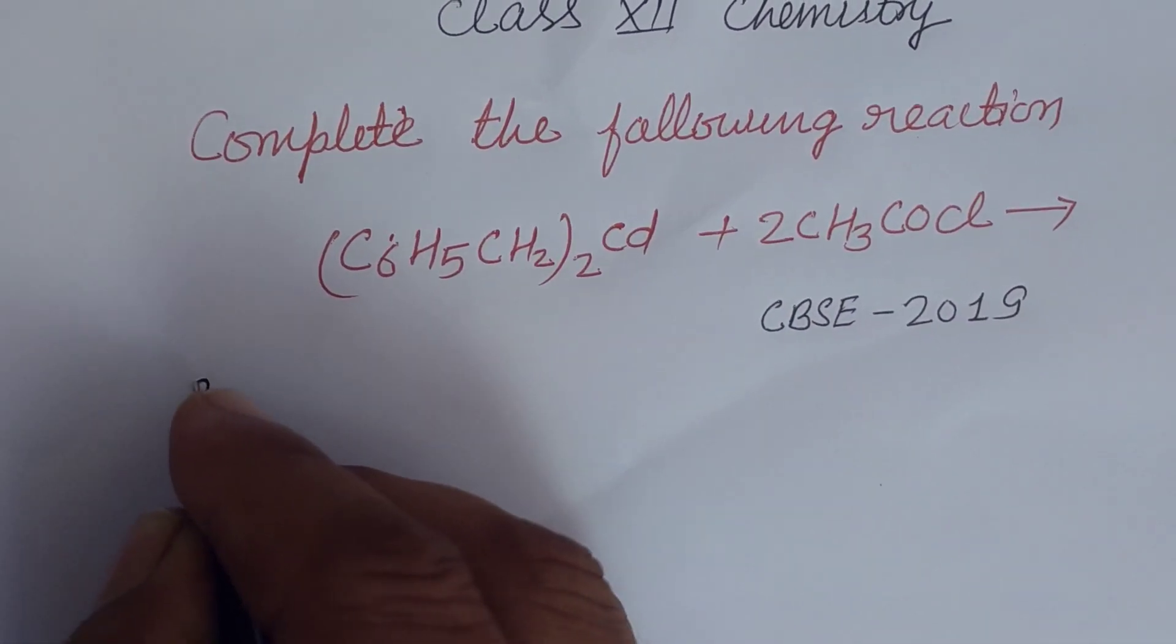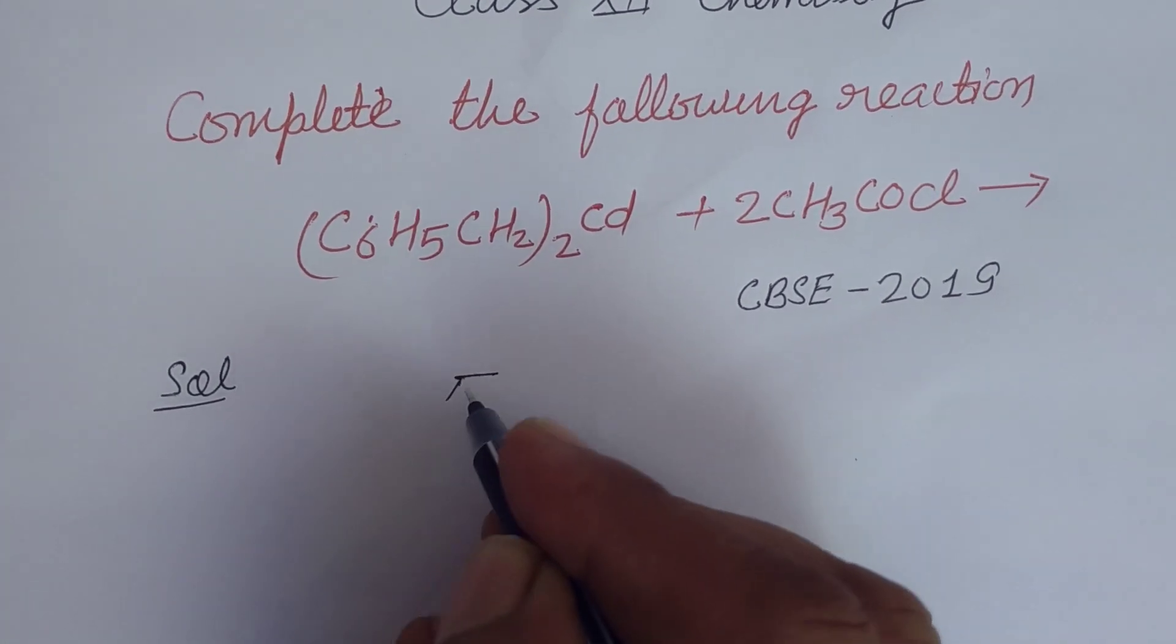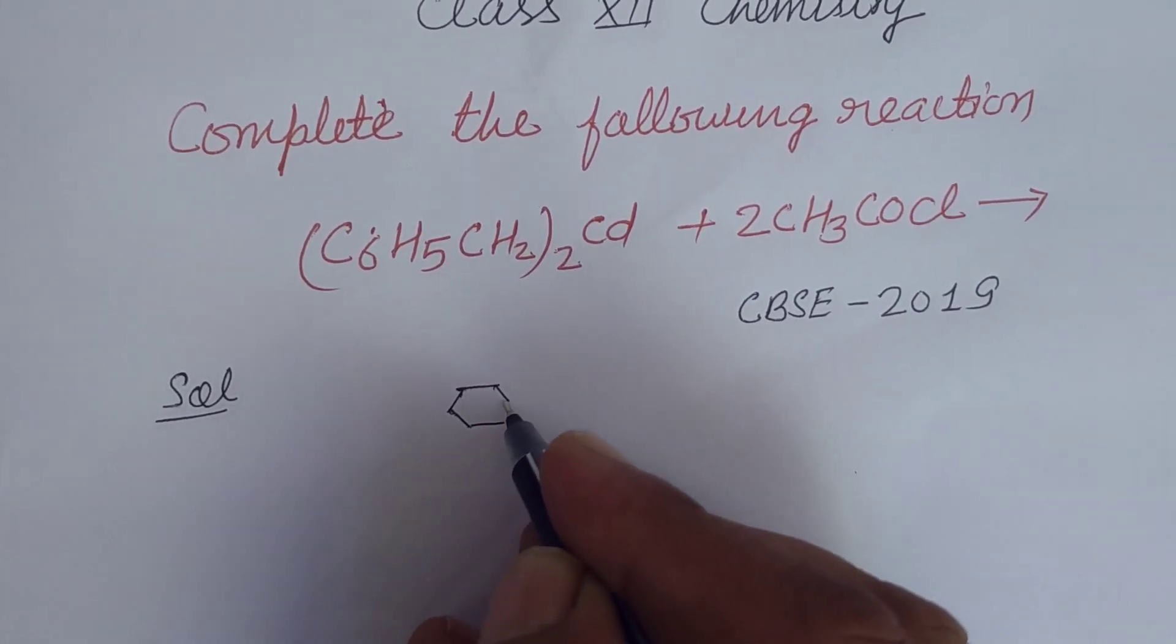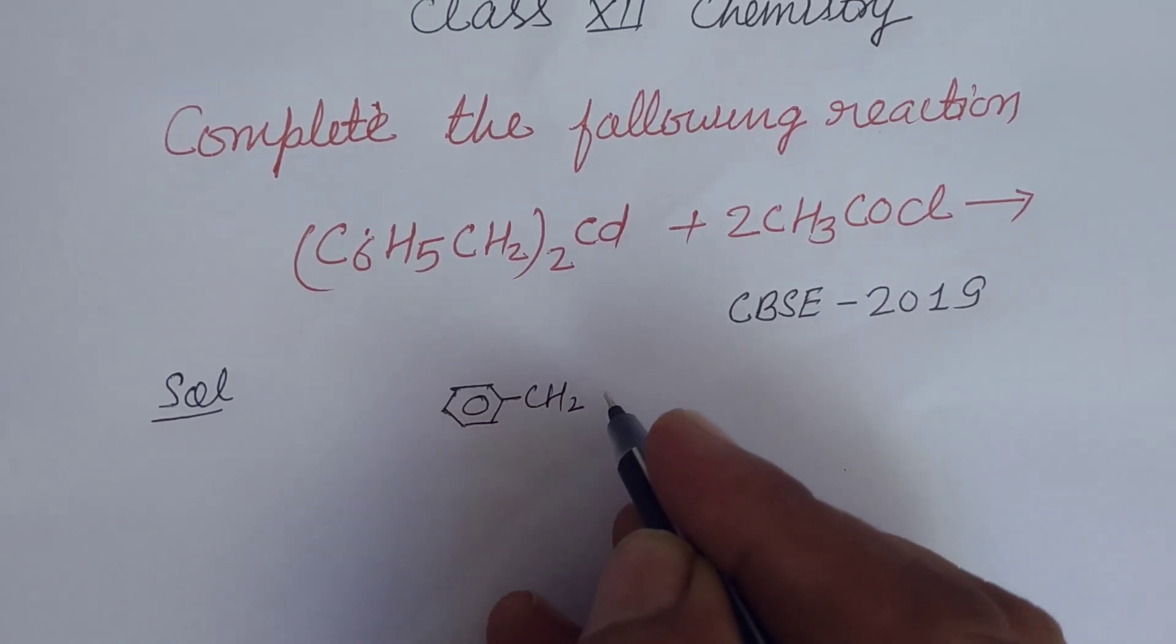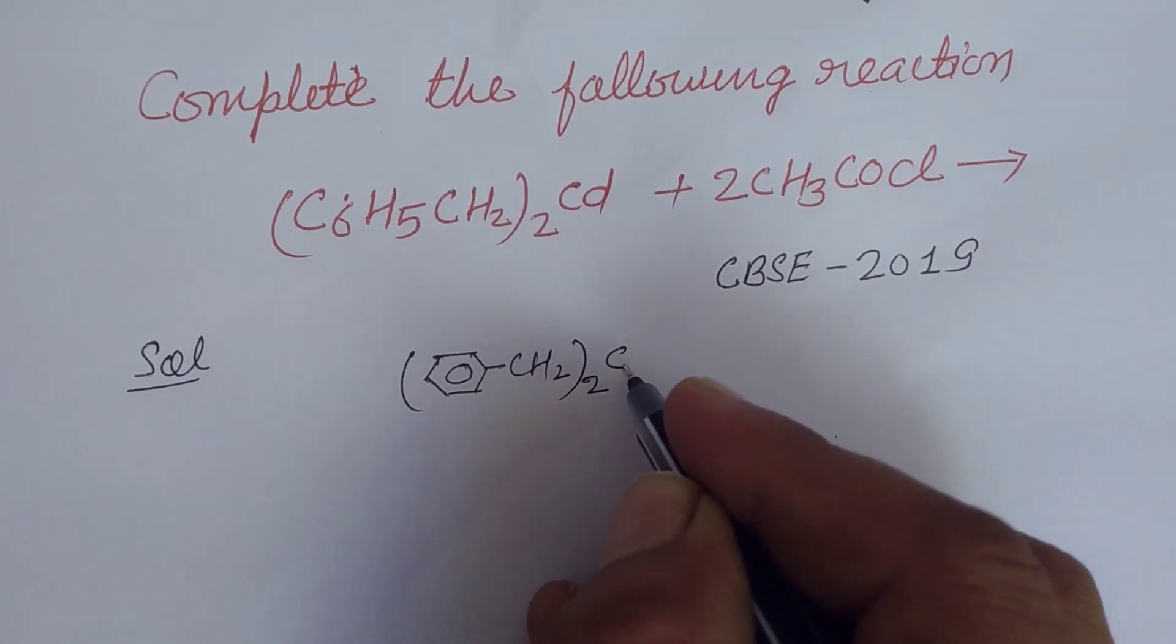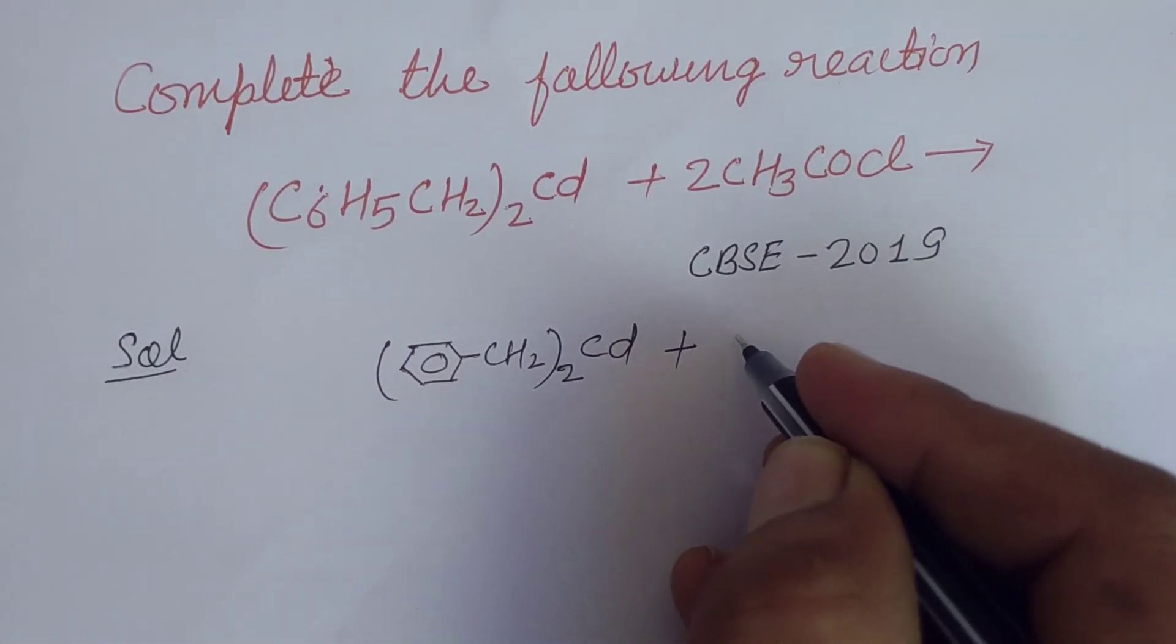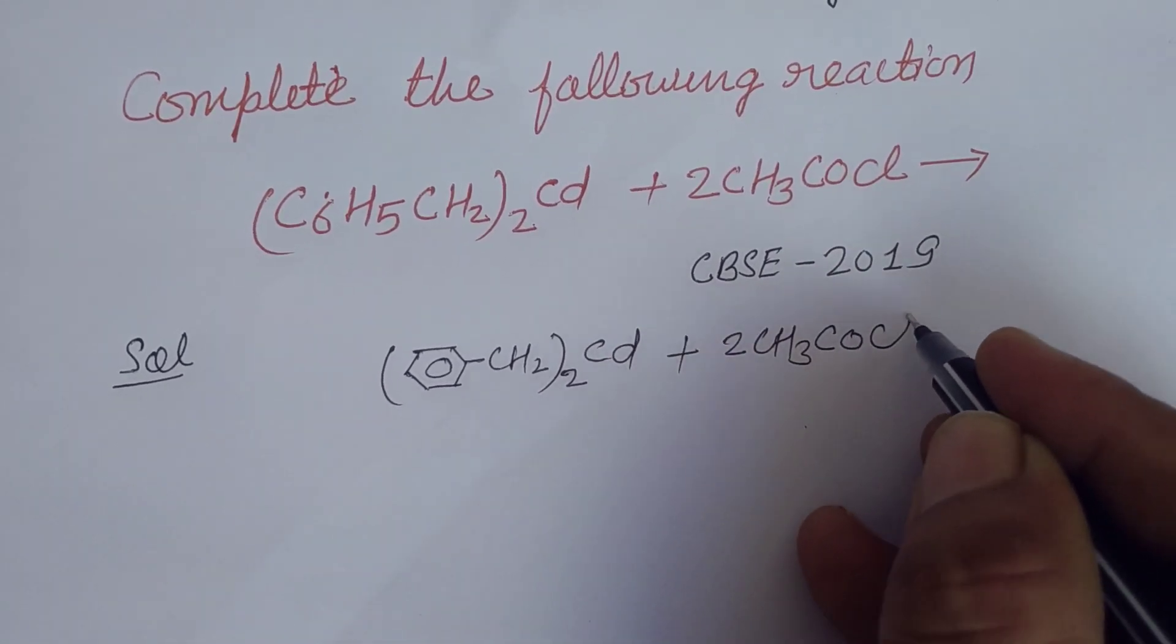So student, here we have benzene CH2 and it is double of CD plus 2CH3COCl.